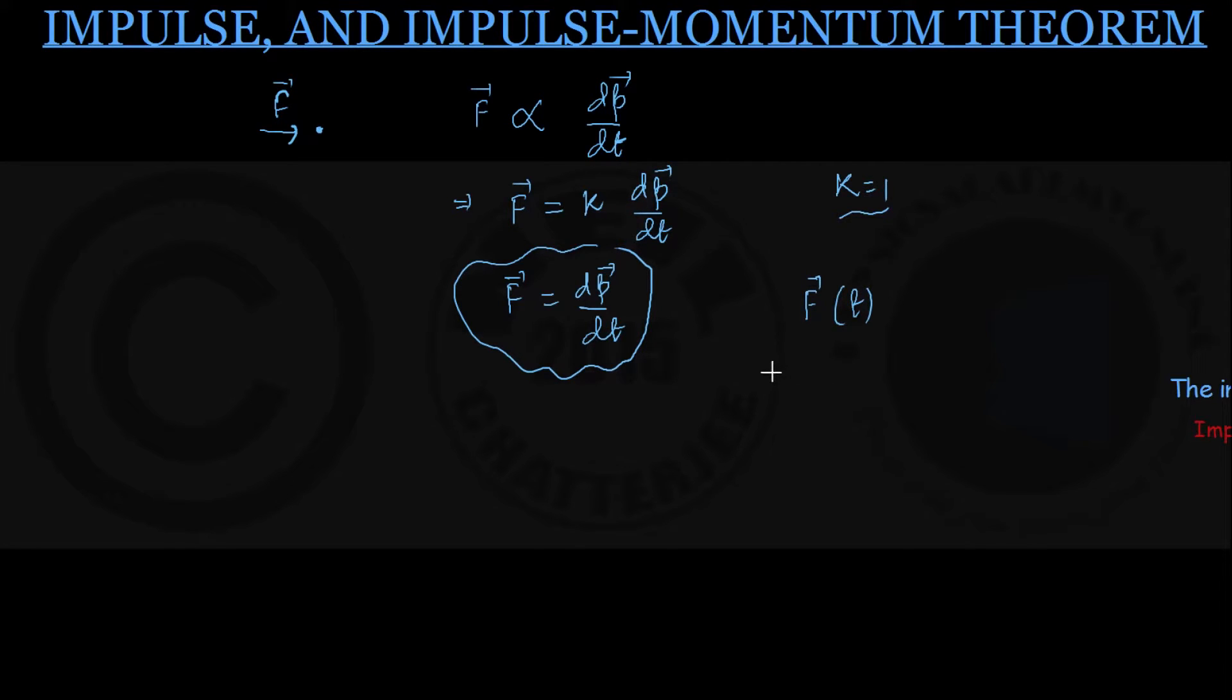And initially at time T1, particle's momentum was P1 when the force started to act on the particle. At a later time T2, momentum has changed to P2 vector. So here we have got the interval over which the force is acting, that's T2 minus T1. And momentum change as the force acts is given by momentum final P2 minus momentum initial P1.